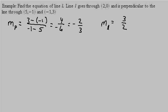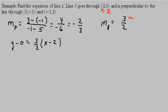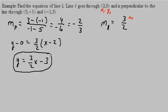So we have the slope m, and we have x1 and y1 to plug into the point-slope formula. We have y minus y1 equals m times x minus x1. So y minus 0 is just y equals 3 halves x minus 3. And there's our equation of our line.